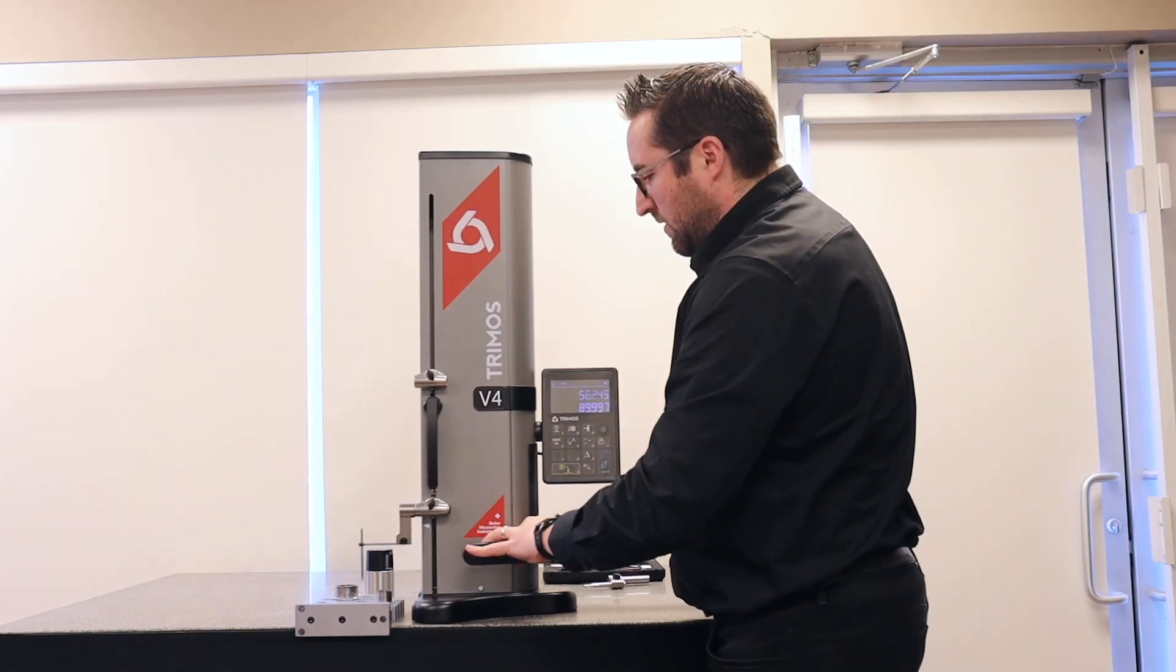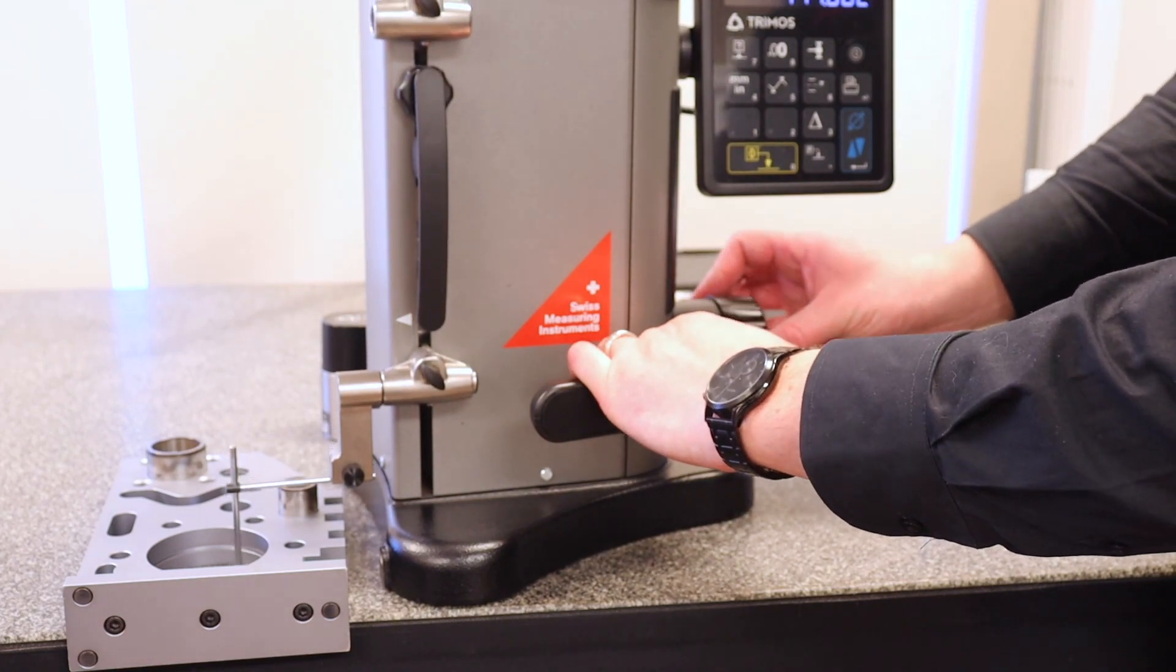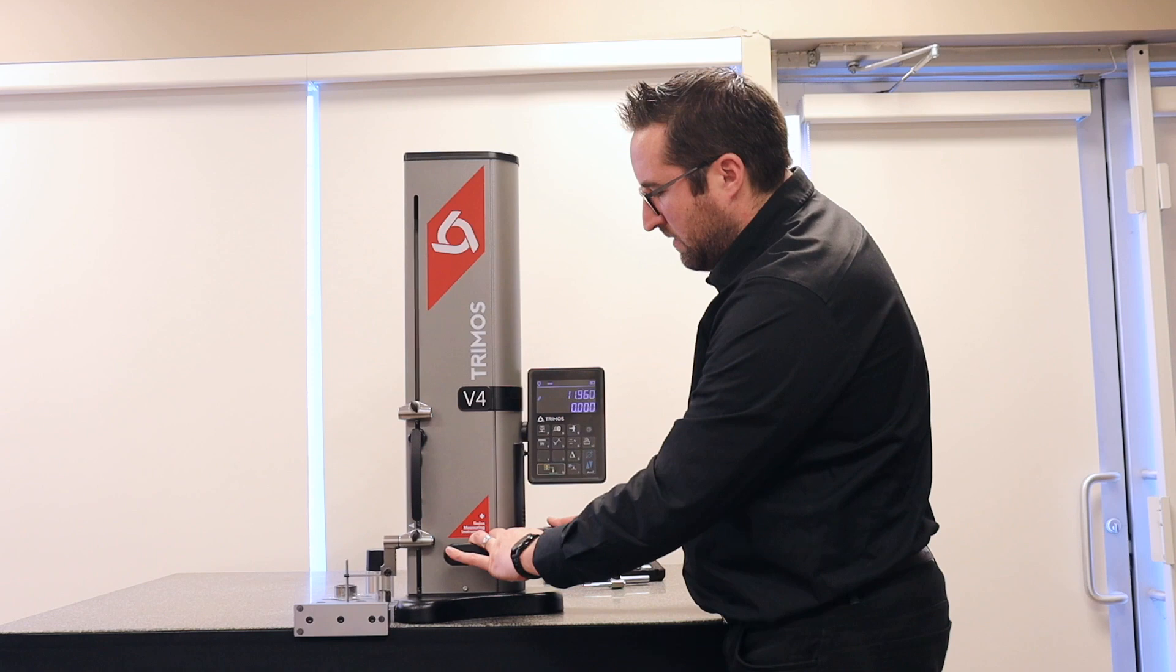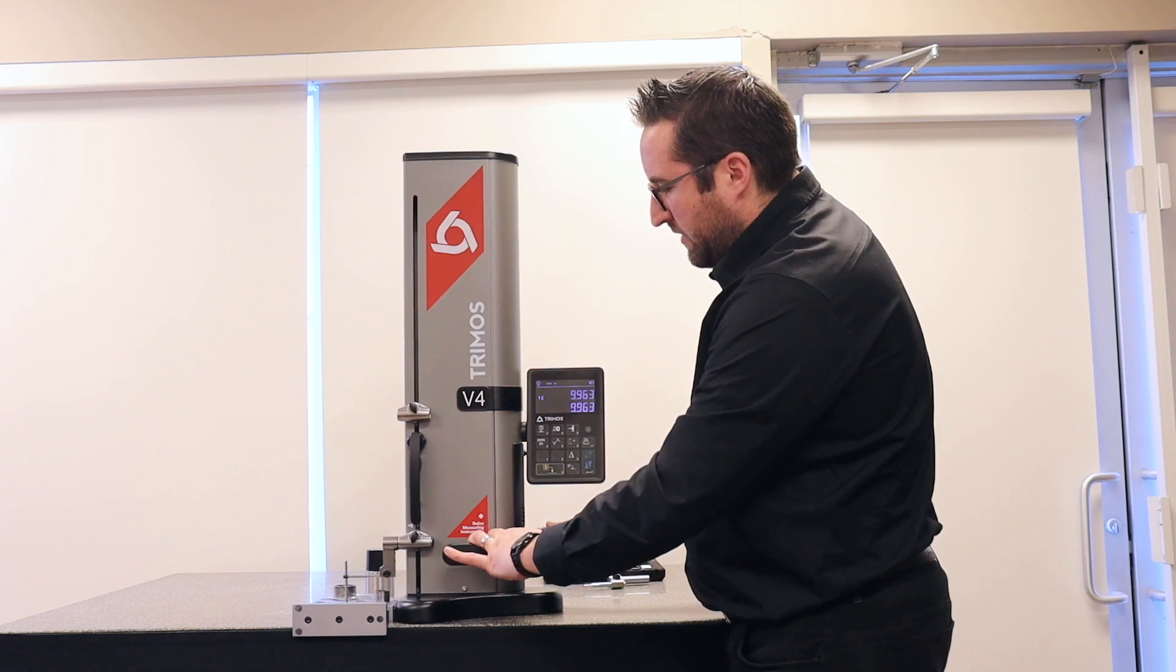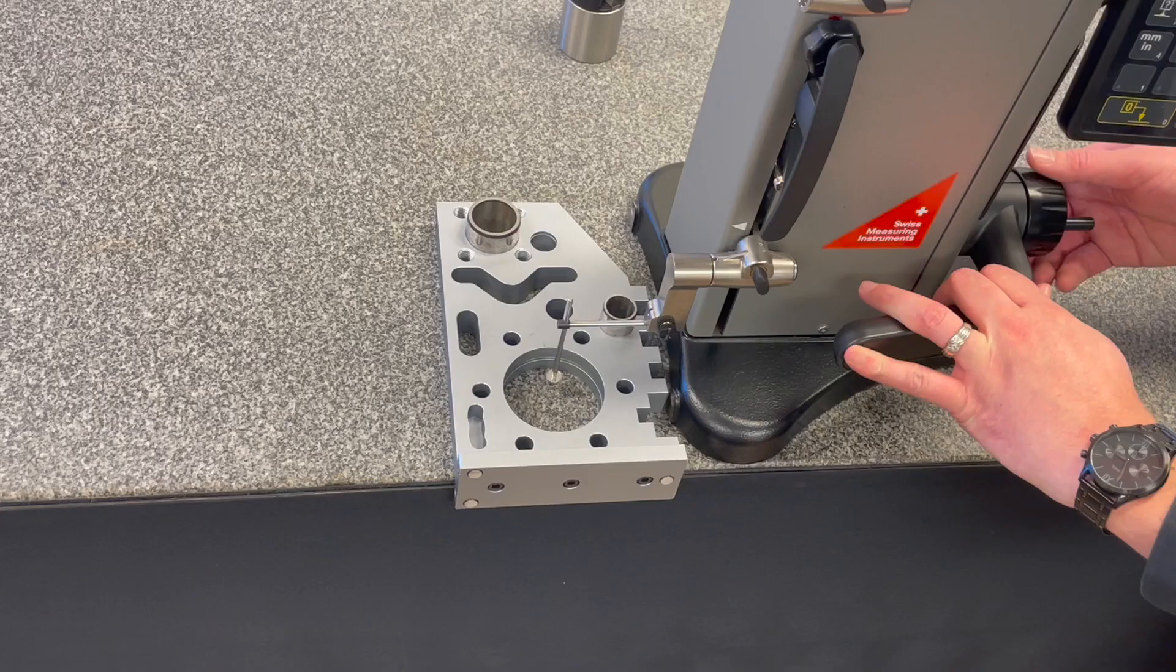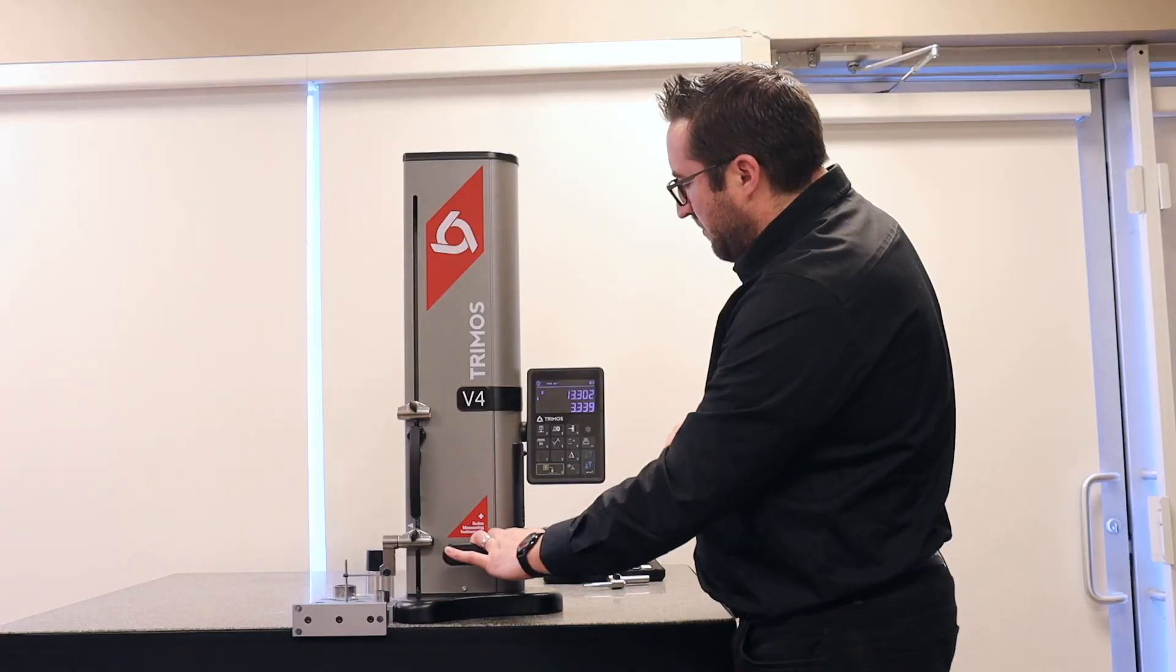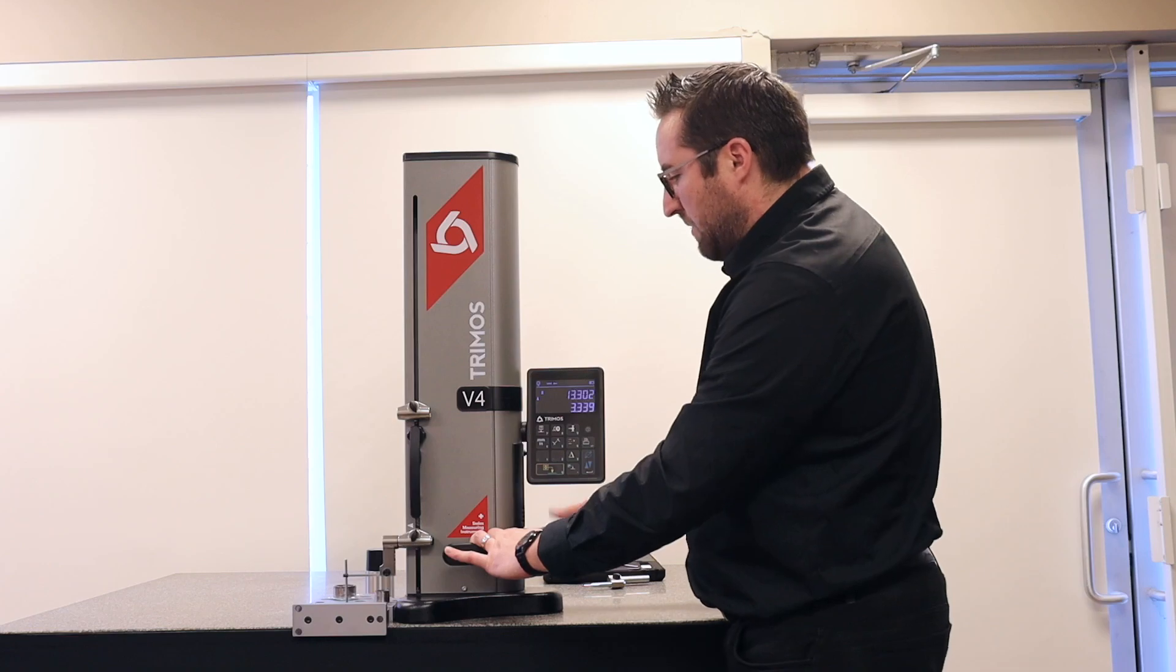Use the air cushion and zero the gauge on the surface plate. Come up over here. Come down to the bottom of the groove and probe the other side. And now we've got the width of the groove is 3.339 millimeters.